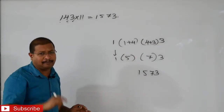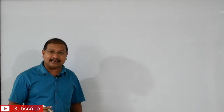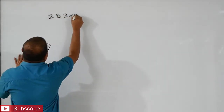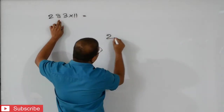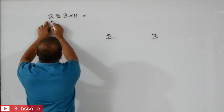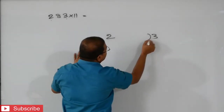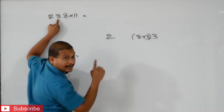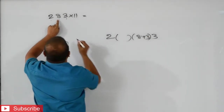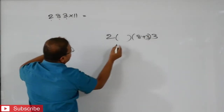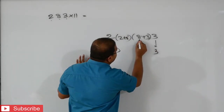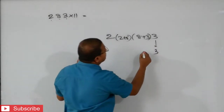Let us see one more number. 283 into 11 equals. First we will write 2 and 3. After that, we will write 8 plus 3, then 2 plus 8. Next step: 3 will write. Then 8 plus 3, that is 11. After that, 2 plus 8, that is 10.